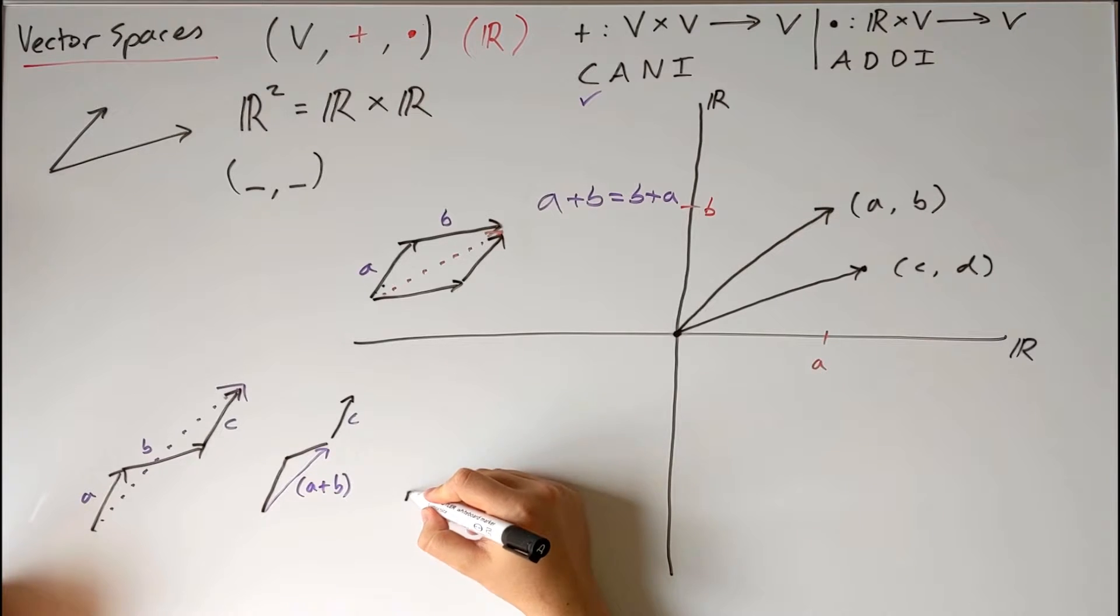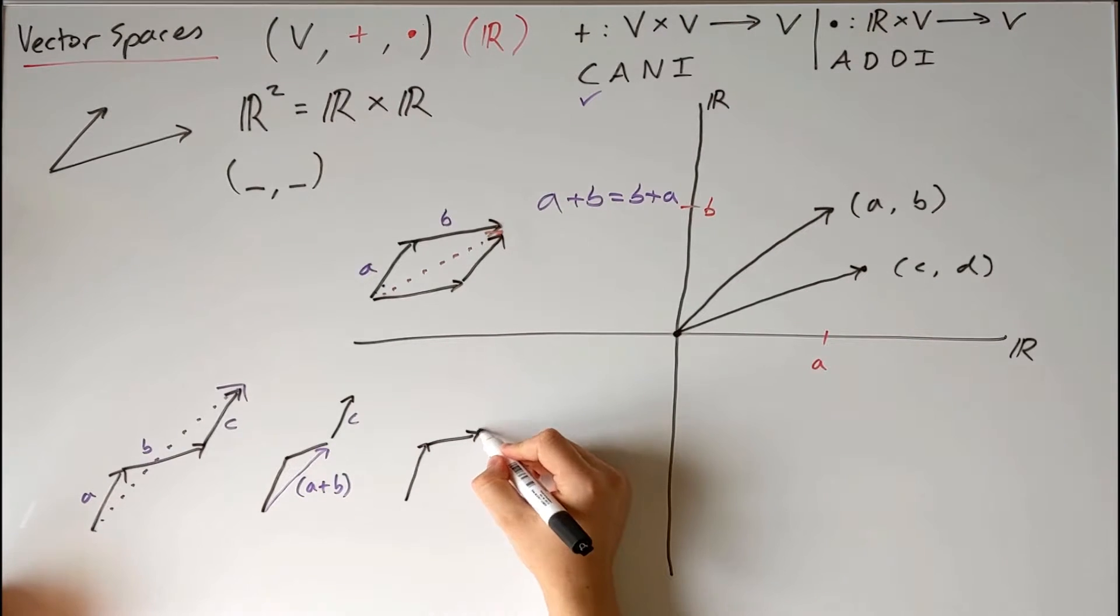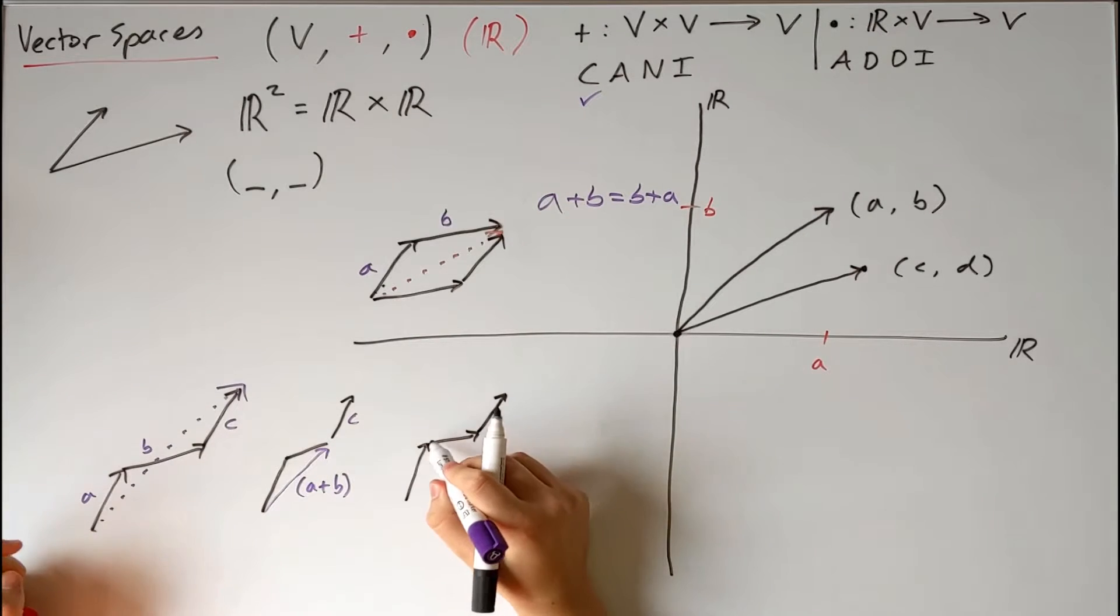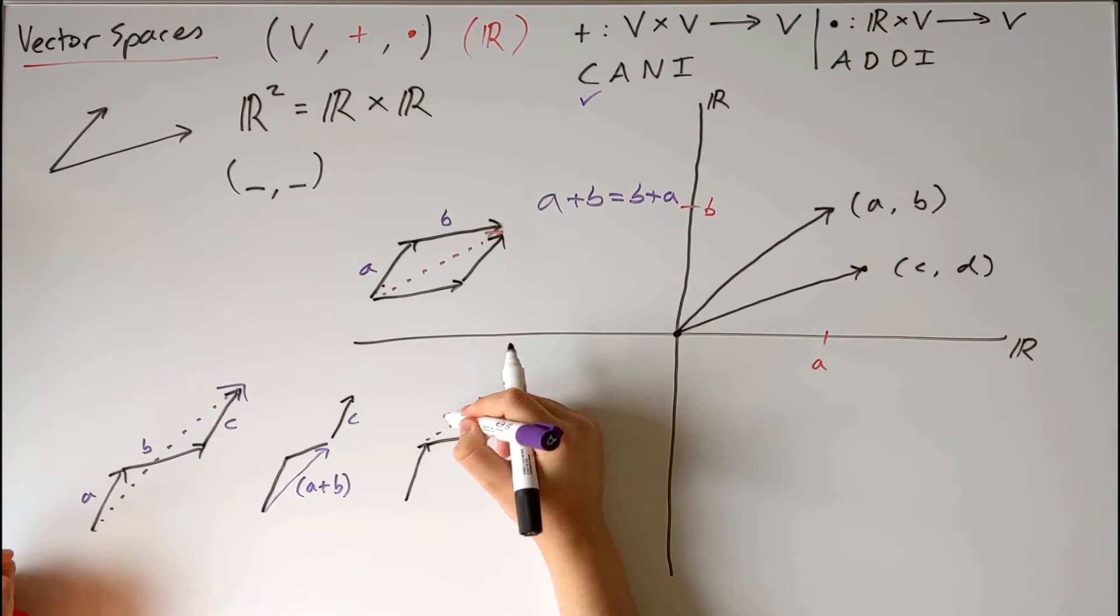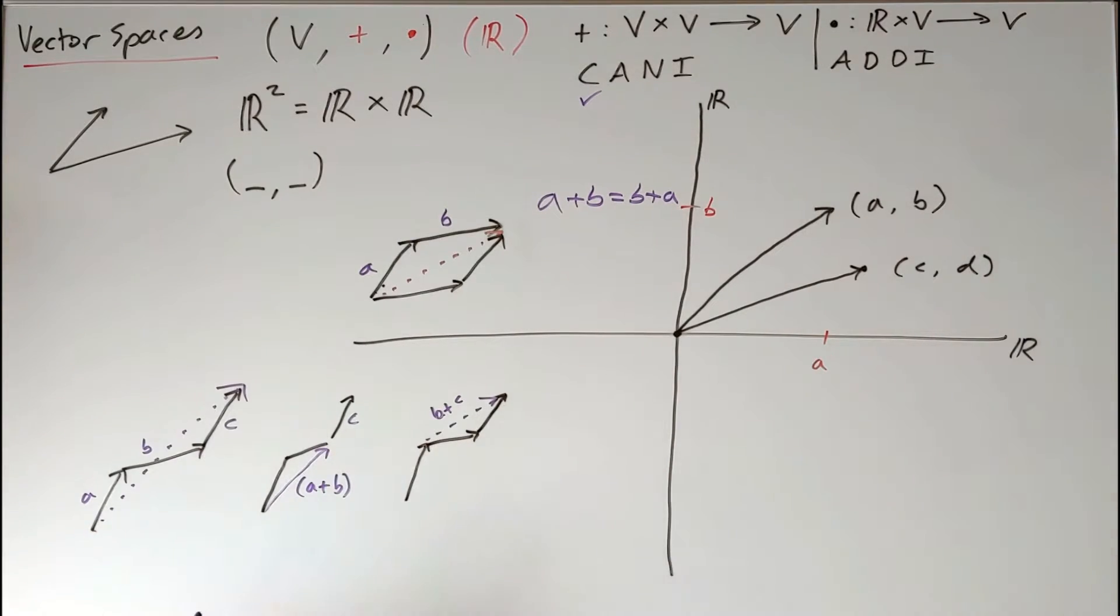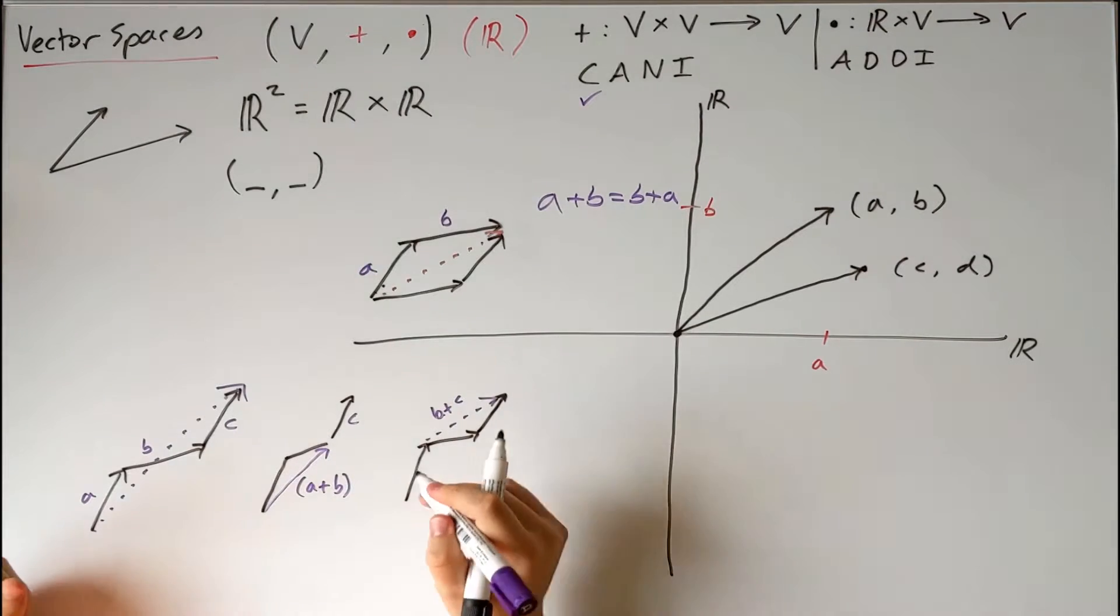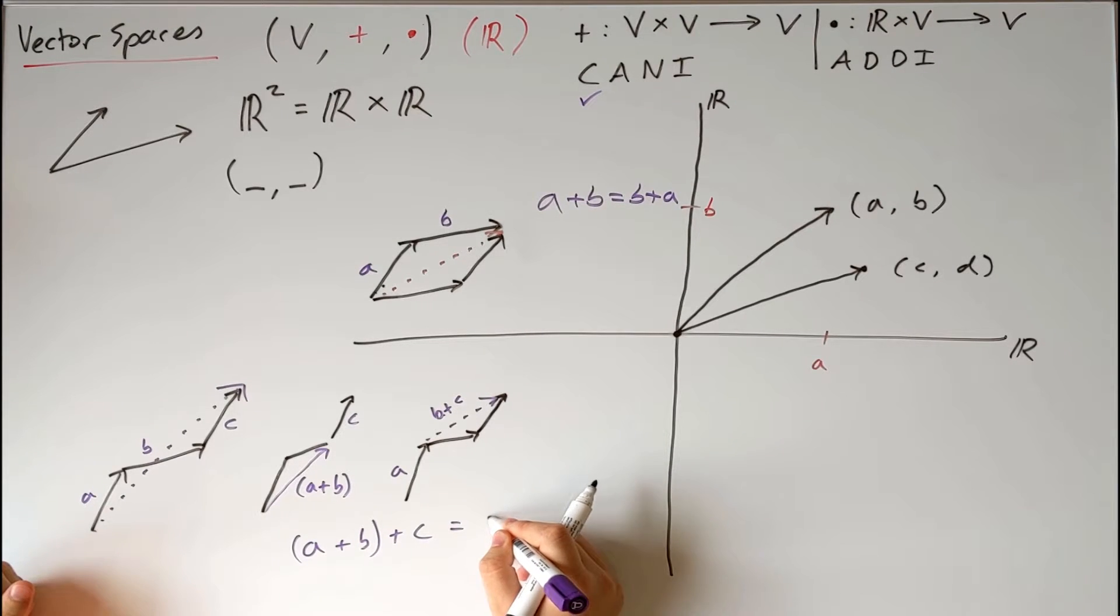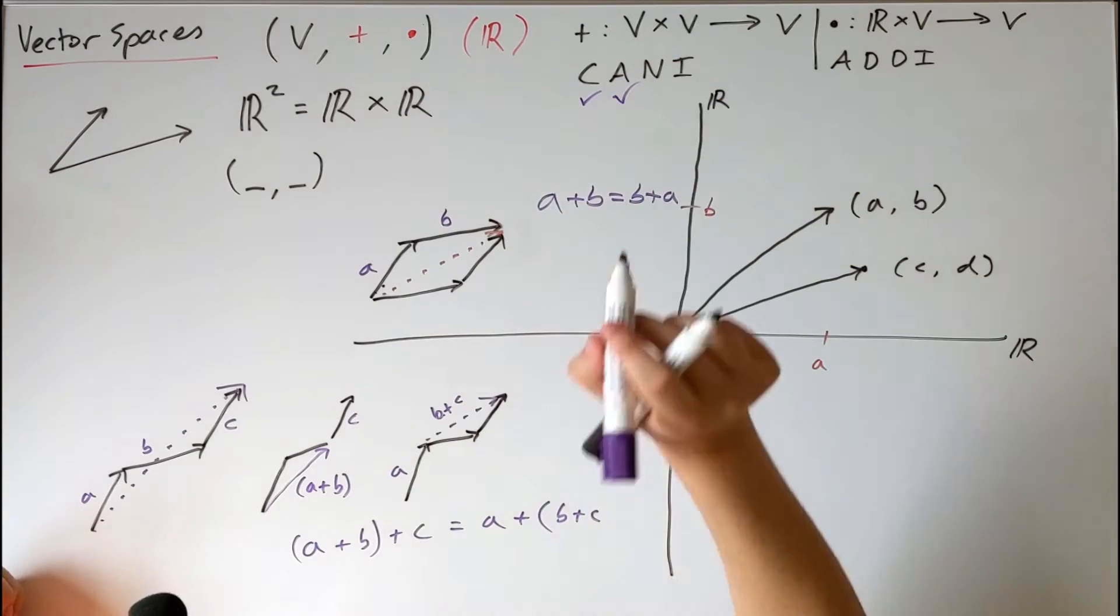And then you could just as equally have done, I'll draw A just in the right place for now, you could have done B plus C first, and then it's kind of a bit harder to see because I've drawn it this way, but you can see that the arrows, the tips all match up, so (A plus B) plus C is equal to A plus (B plus C). So we have associativity as well.